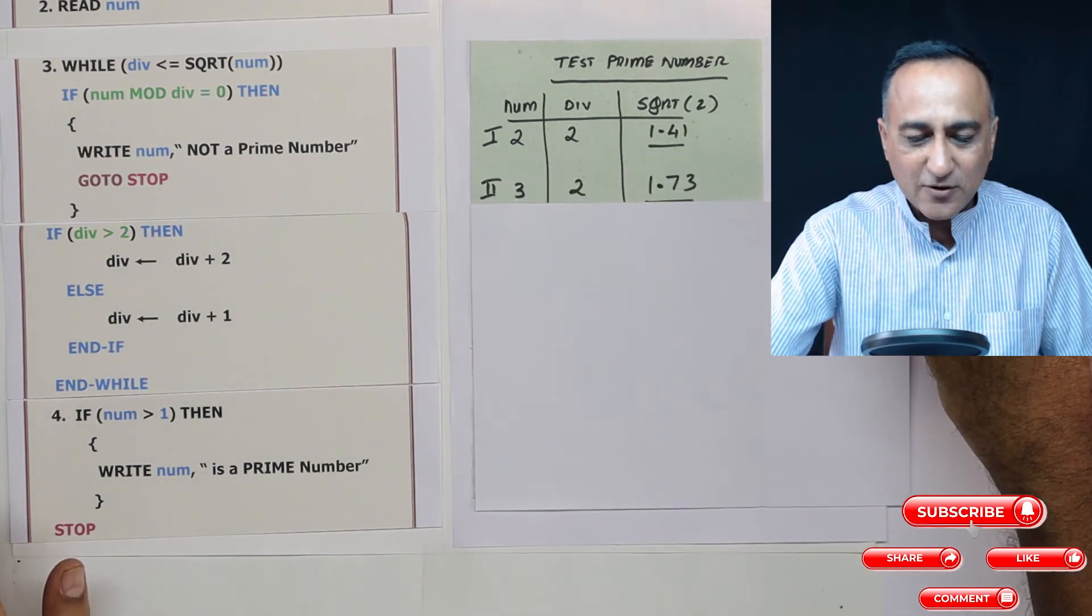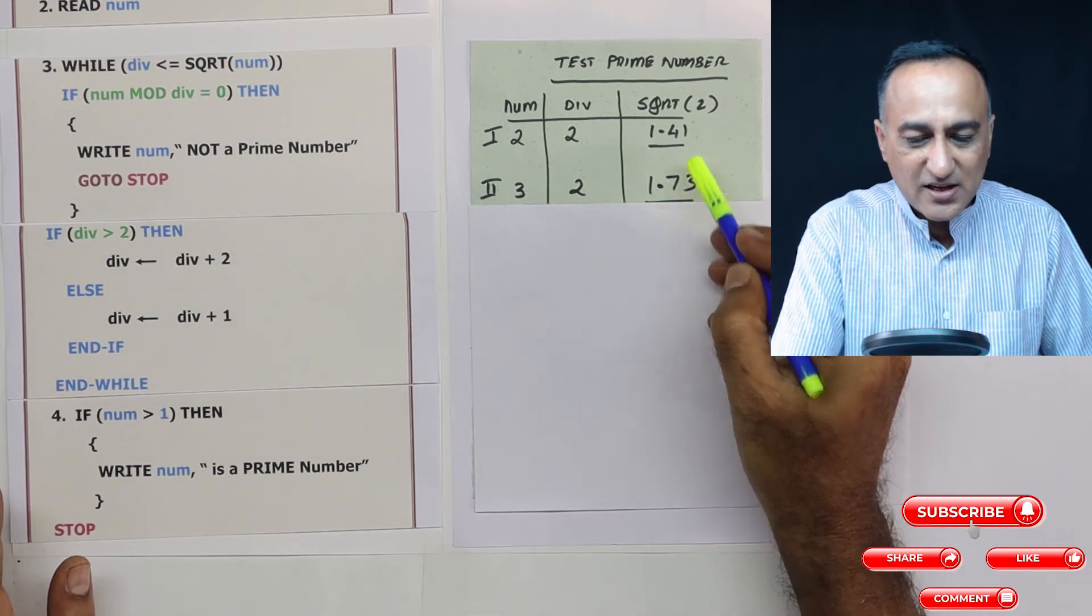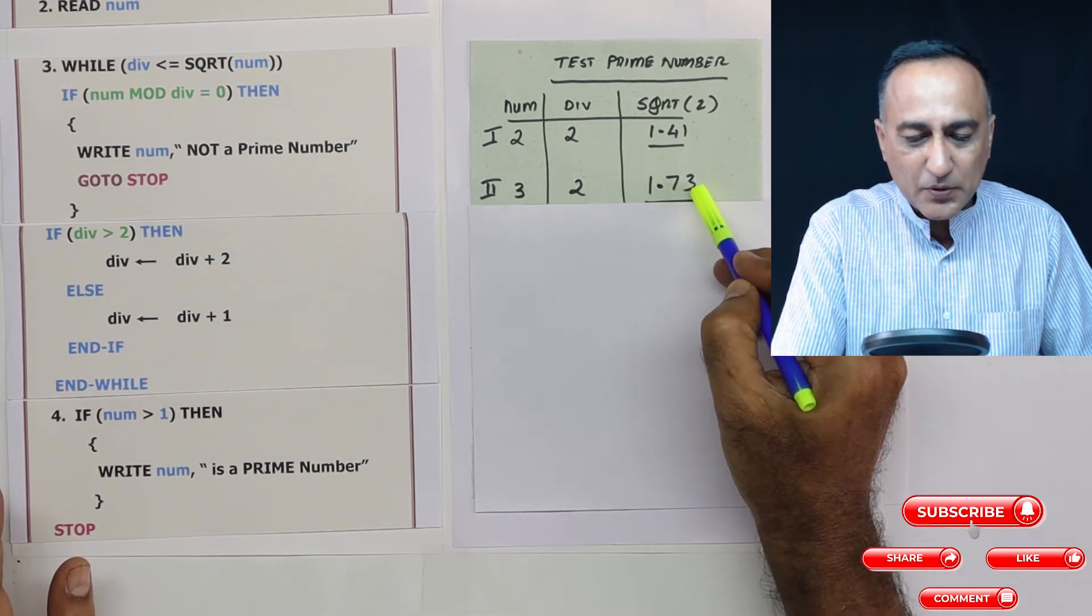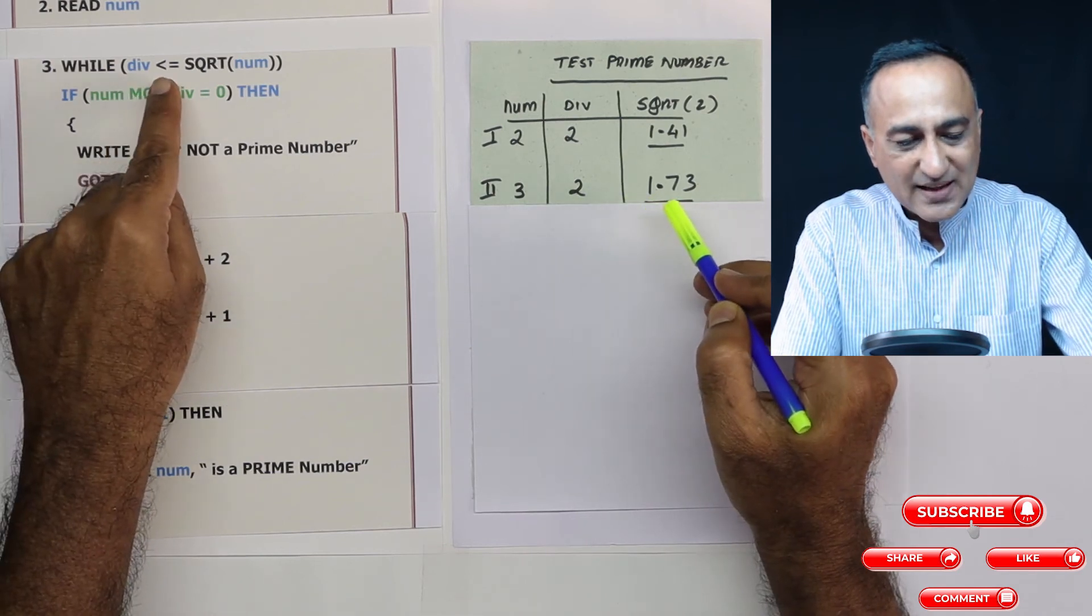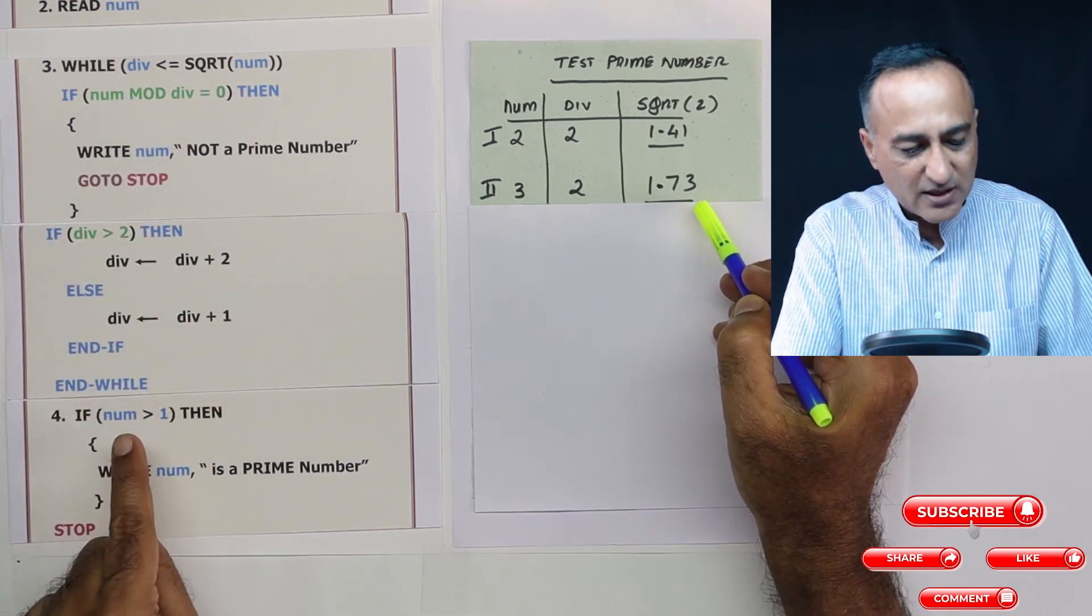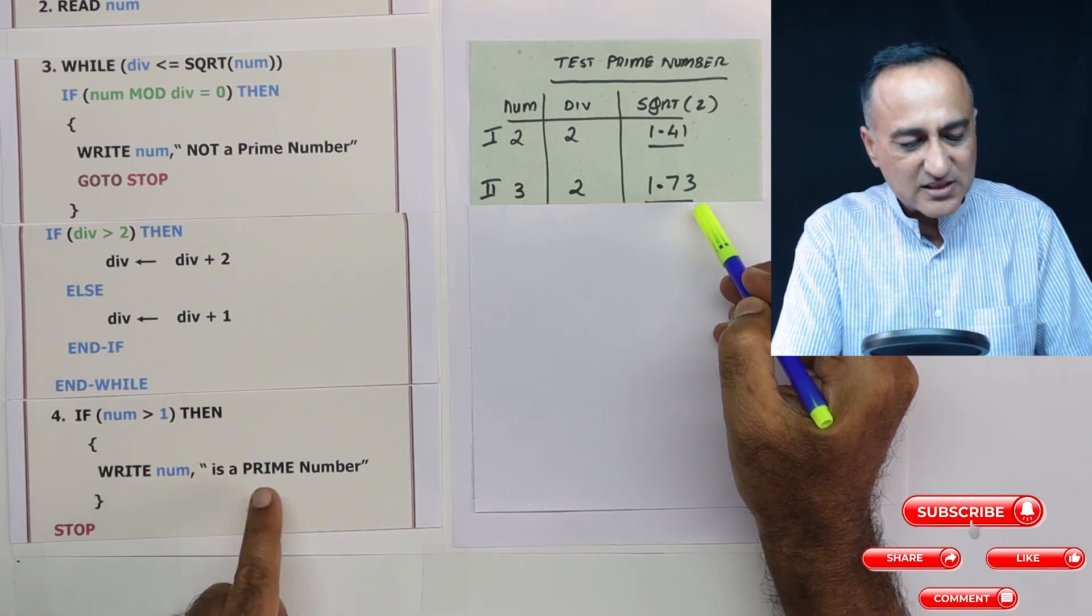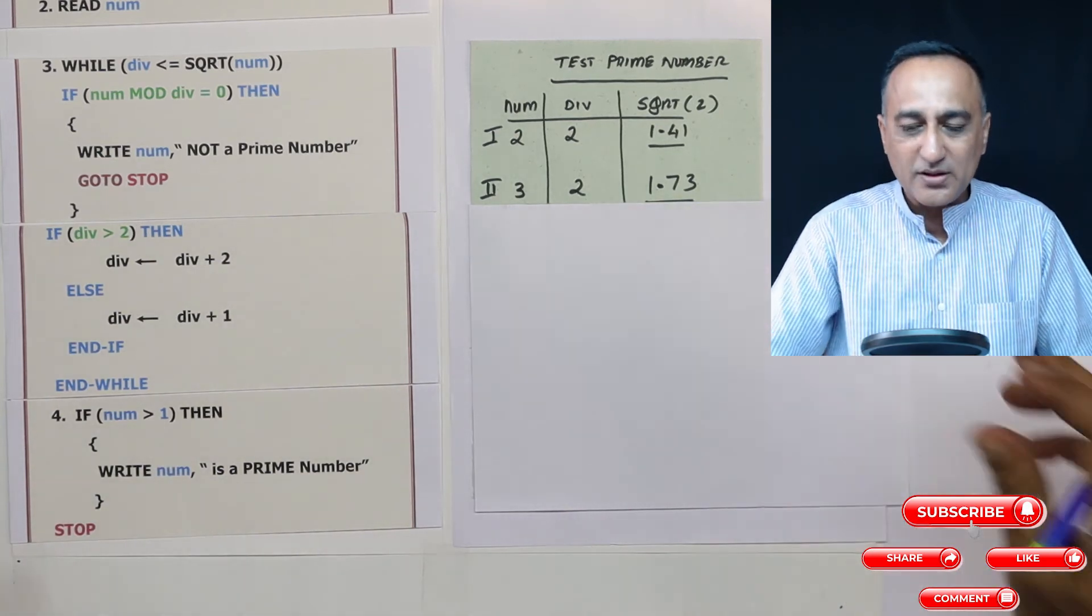Let's take a case of number being 3. Number is 3, square root of 3 is 1.73, divisor is 2. 2 is less than or equal to 1.73 is again false. 3 is greater than 1, 3 is a prime number. So I have dealt with 2 and 3.